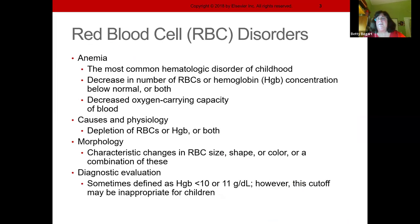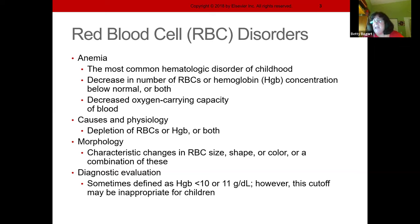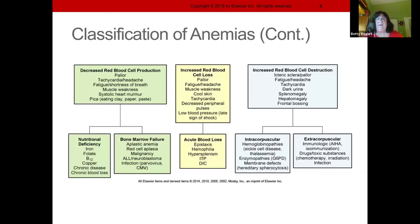Red blood cell disorders — we call them anemia — this is the most common condition. It's when you don't have enough red blood cells. Red blood cells carry oxygen and iron; without that, the body isn't getting what it needs to survive. A hemoglobin of 10 is the cutoff in children. Types of anemia include decreased red blood cell production, increased blood cell loss from bleeding, and increased red blood cell destruction.